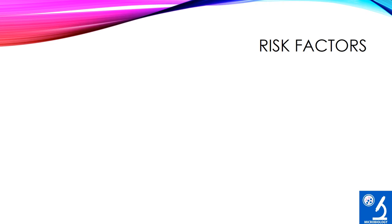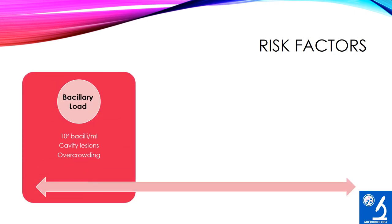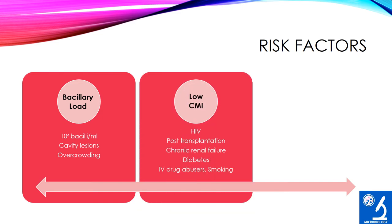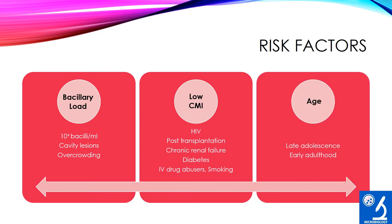Risk factors that promote tuberculosis: First is bacillary load — at least 10 to the power of 4 bacilli per mL in sputum is required for effective transmission. Adult patients with cavitary lesions in the lung have more bacillary load in sputum and transmit more efficiently. Overcrowding in poorly ventilated rooms is also a risk factor. Another is low cell-mediated immunity, as in patients with HIV, post-transplantation, chronic renal failure, diabetes, IV drug abuse, and smoking. Individuals at the two extreme age periods are also more prone to infection.